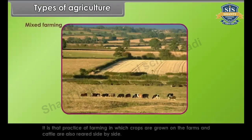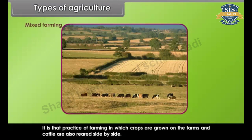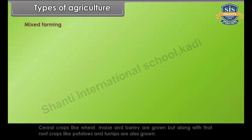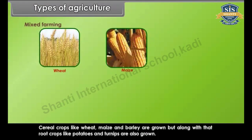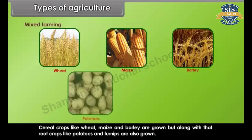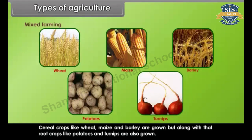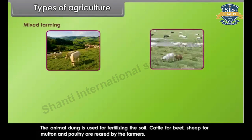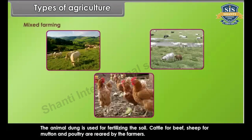Mixed farming is the practice of farming in which crops are grown on the farms and cattle are also reared side by side. This type of farming is quite popular where the size of the farm is moderate. Cereal crops like wheat, maize and barley are grown, but along with that, root crops like potatoes and turnips are also grown. The animal dung is used for fertilizing the soil. Cattle for beef, sheep for mutton and poultry are reared by the farmers.